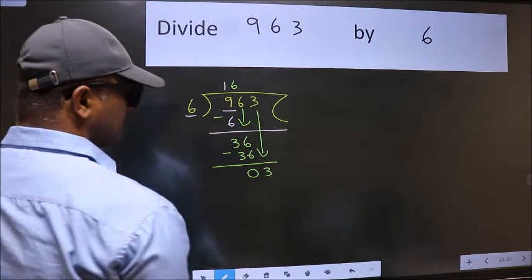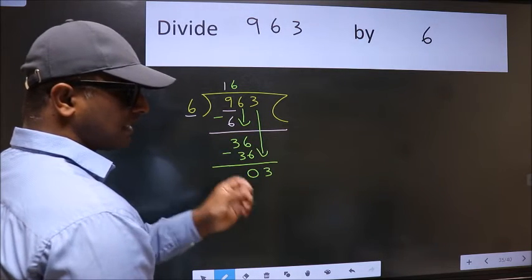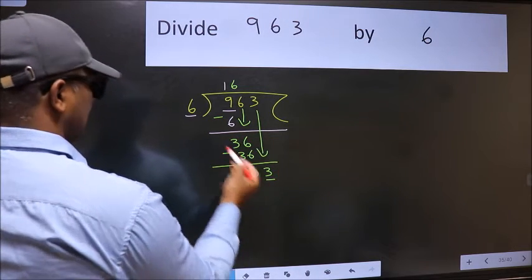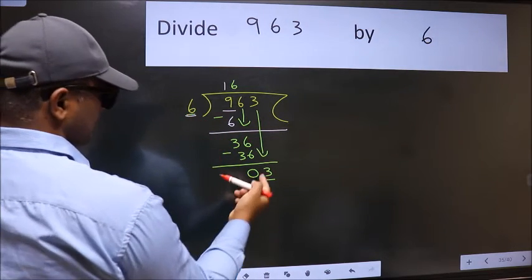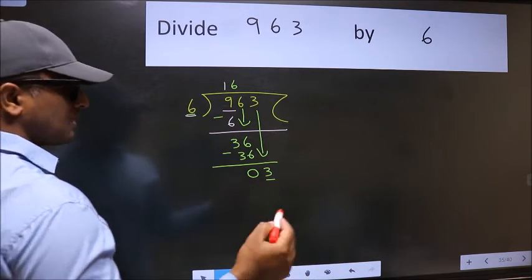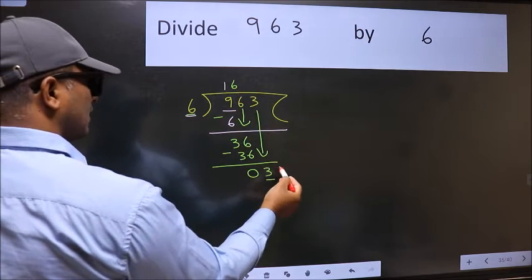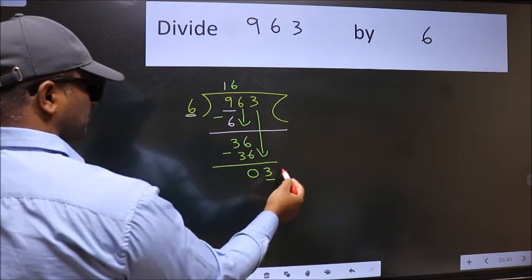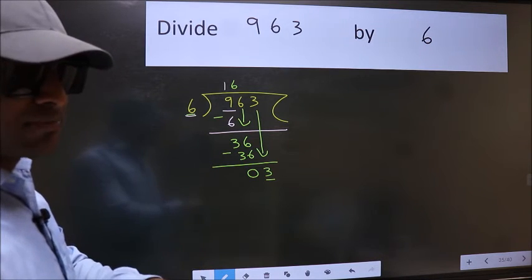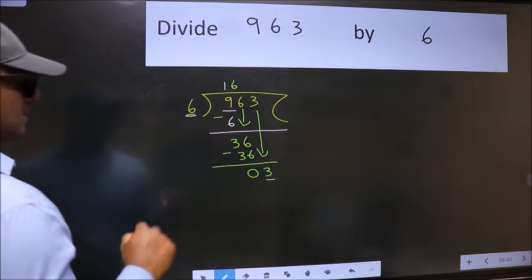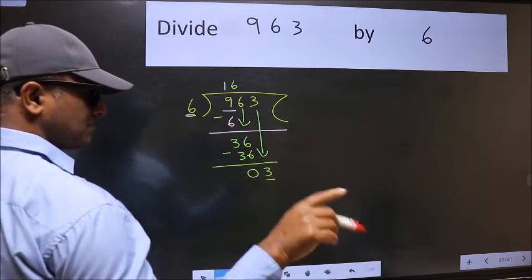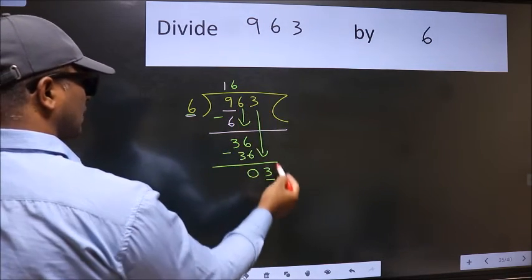After this step, the mistake happens. And the mistake is this: here we have 3 and here 6. 3 is smaller than 6. So what many do is they directly put dot, take 0, which is wrong. Why is it wrong? Because just now you brought this number down, and in the same step you want to put dot, take 0, which is wrong.